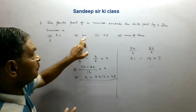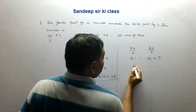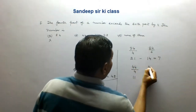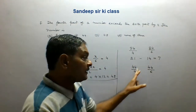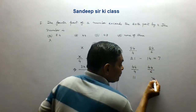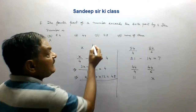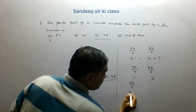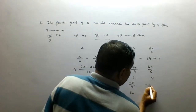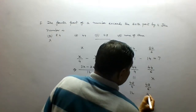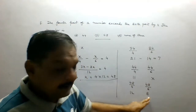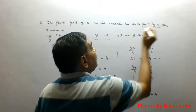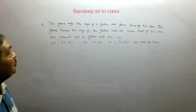Now see option B, which is 44. 44 divided by 4 is 11. But 44 divided by 6 gives a fraction, so option B is also not correct. Now option C is 48: 48 divided by 4 is 12, and 48 divided by 6 is 8. So 12 minus 8 equals 4, which is correct — hence option C is correct.